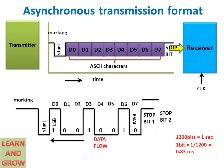The data flows from D0 to D7. First D0 is sent by the transmitter, then D1, D2, D3, and so on up to D7. At 1200 bits per second, one bit is equal to 1 divided by 1200, which means one bit takes approximately 0.83 milliseconds to send. That is the asynchronous transmission format.